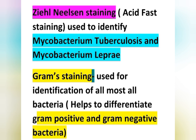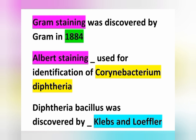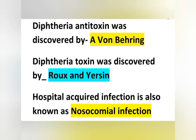Gram staining was discovered by Gram in 1884. Albert staining is used for the identification of Corynebacterium diphtheriae. Diphtheria bacillus was discovered by Klebs-Loeffler. The diphtheria toxin was discovered by Von Behring, and also by Roux and Yersin.